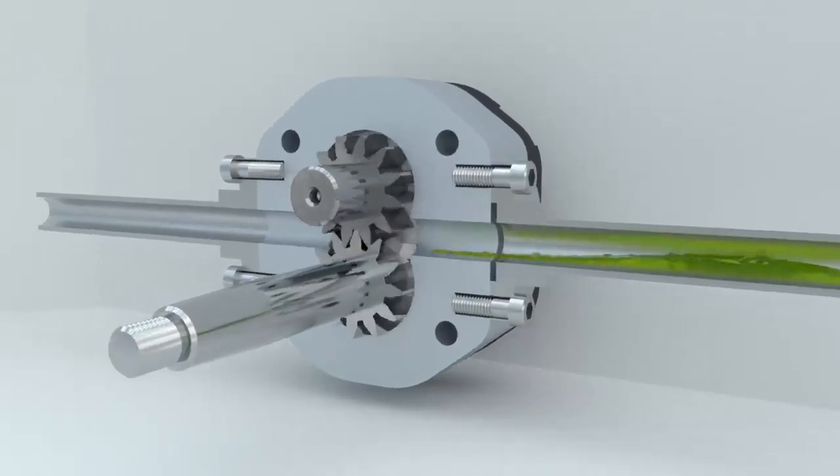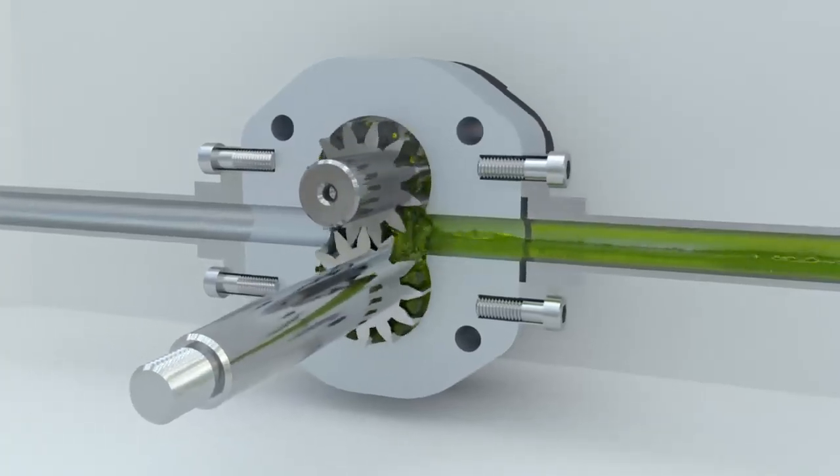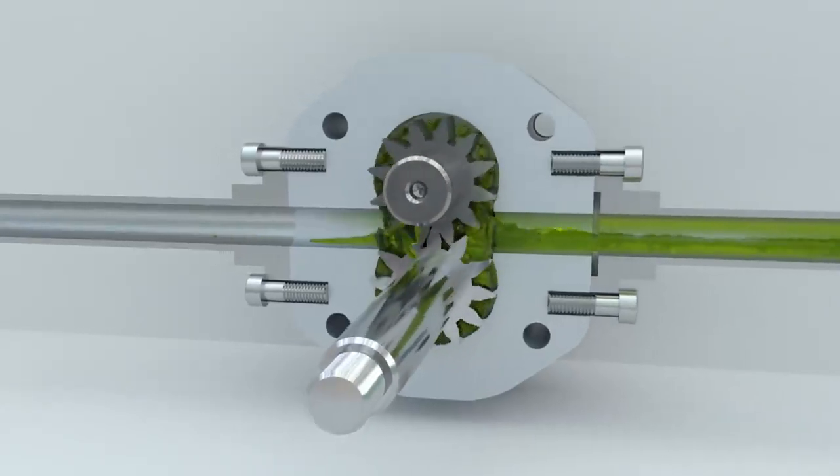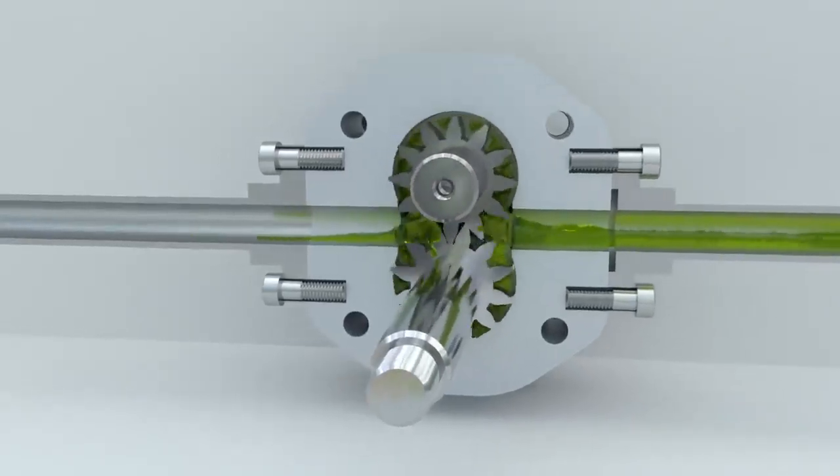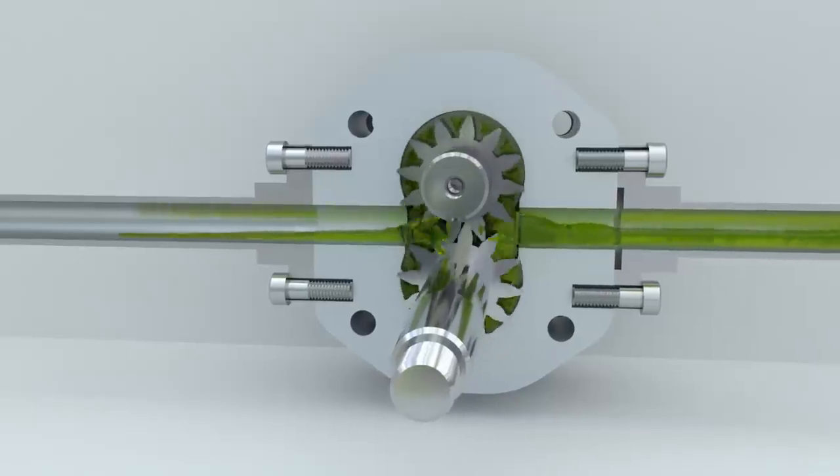When the gear teeth come out of the mesh, the volume of the chamber increases and the pressure inside this chamber becomes lower than atmospheric pressure. Fluid from the tank enters the pump and fills the space between the gear teeth and the housing.